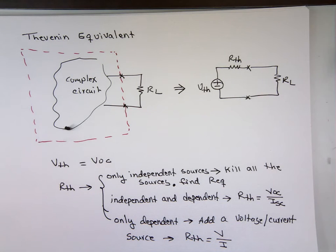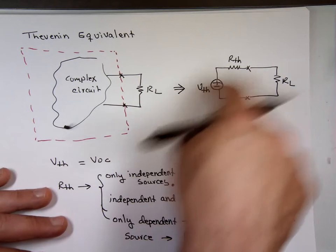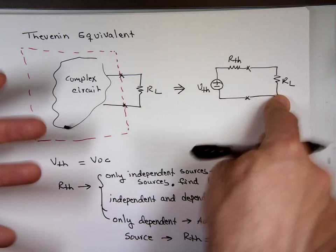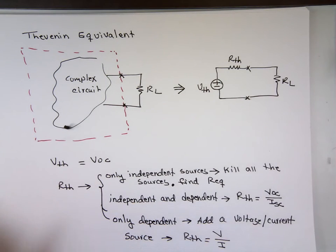I'll go through all three cases and show you one by one how do we do it. But that's how I find R-Thevenin. Once you have R-Thevenin and you have V-Thevenin, you can find what the voltage across that load there if you're looking for or the current through it.